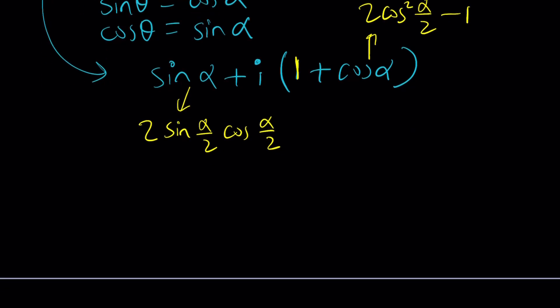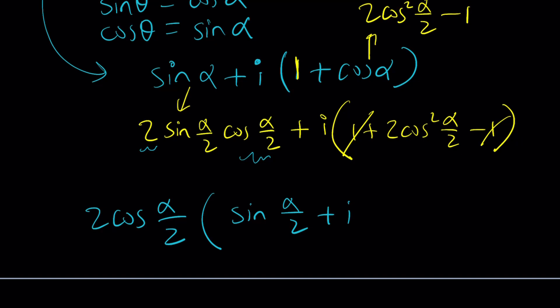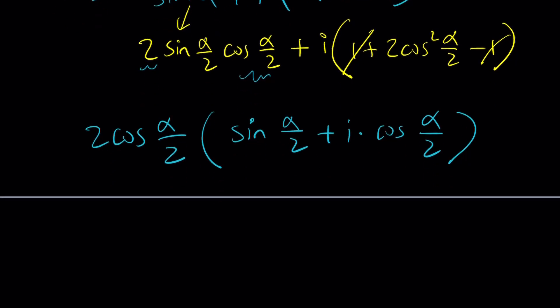Make sense? Awesome. Now let's go ahead and plug this all in. We're going to get i times one plus two cosine squared alpha over two minus one. And now the one is going to cancel out, leaving us with something nicer. But notice that two cosine alpha over two is a common factor. So let's go ahead and take that out. And then inside, we're going to have sine alpha over two plus i times cosine alpha over two. Awesome.